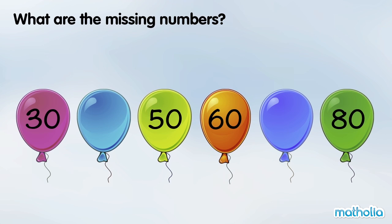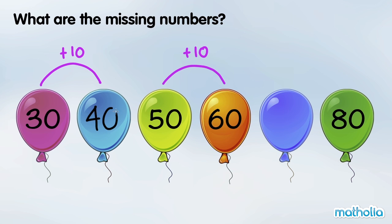What are the missing numbers? 50 plus 10 is 60. In each step the numbers go up by 10. 30 plus 10 is 40. 60 plus 10 is 70. The missing numbers are 40 and 70.